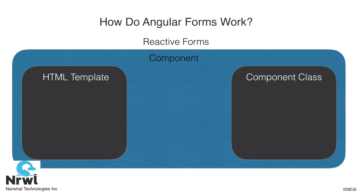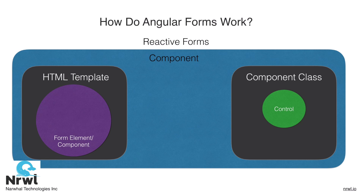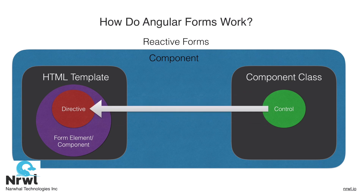Let's build a simple mental model of how reactive forms work. On the screen we have a diagram of a component, showing both the component class and the HTML template. We start by creating a component class property that houses a control, then in our template we have a target form element that we want to bind this control to. Using the Forms API directive, we bind our control to the target element, keeping them in sync. The mechanism that creates this bridge is called the control value accessor. For every HTML form element, there is a control value accessor that the Angular Forms API provides out of the box. We can also create our own control value accessors for custom components, so we can use the same pattern to control a custom component via the same form control mechanism.